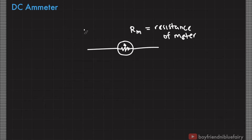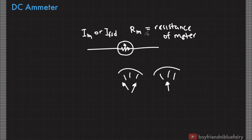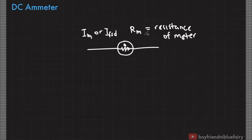We represent the full-scale deflection current as I sub M or I sub FSD. This is the current at which the needle deflects to its maximum value. If the current is less than I sub M, the needle deflects only partially. I sub M sets a limit for the maximum amount of current the galvanometer can handle. When you provide a current greater than I sub M, it can destroy the galvanometer or melt its coils. So in designing an ammeter, we must prevent any current greater than the full-scale deflection current from passing through.